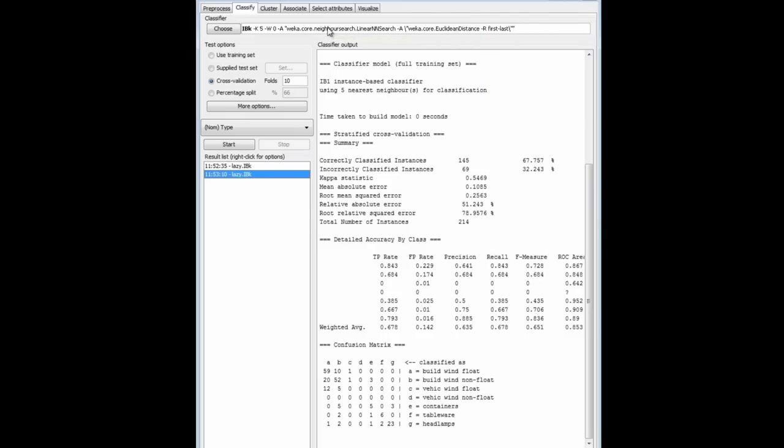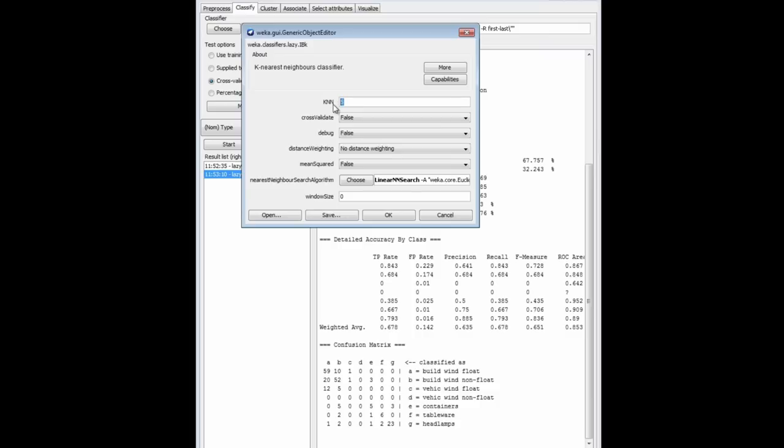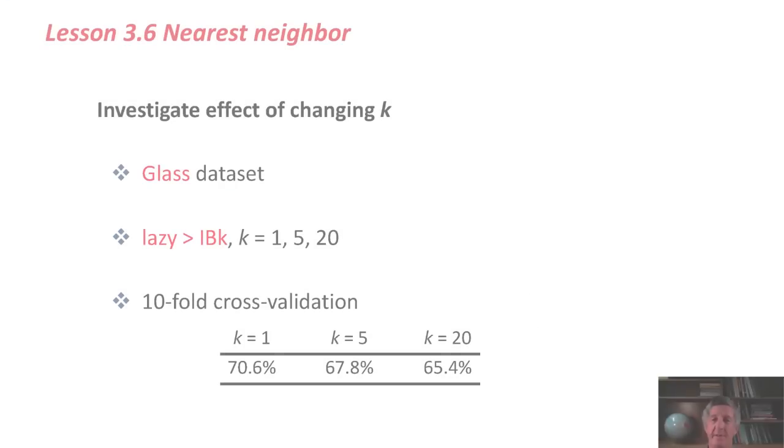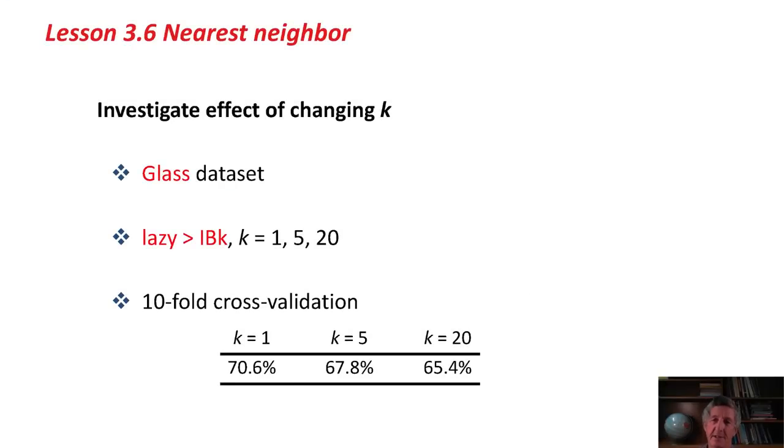This is not such a noisy data set, I guess. If we change it to, say, 20, and run it again, we get 65% accuracy, slightly worse again. If we had a noisy data set, we might find that the accuracy figures improved as k got a little bit larger.